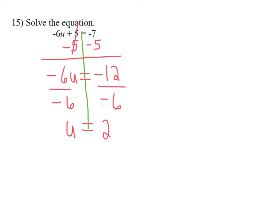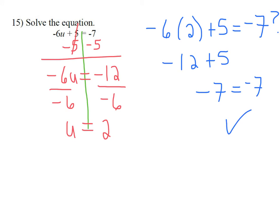So the solution to this equation is u equals positive 2. I can check my solution by plugging it back into the original equation. Negative 6 times 2 plus 5. I want to see if that does indeed equal negative 7. Negative 6 times 2 is negative 12. Negative 12 plus 5 is negative 7. So this proves that my answer is correct.